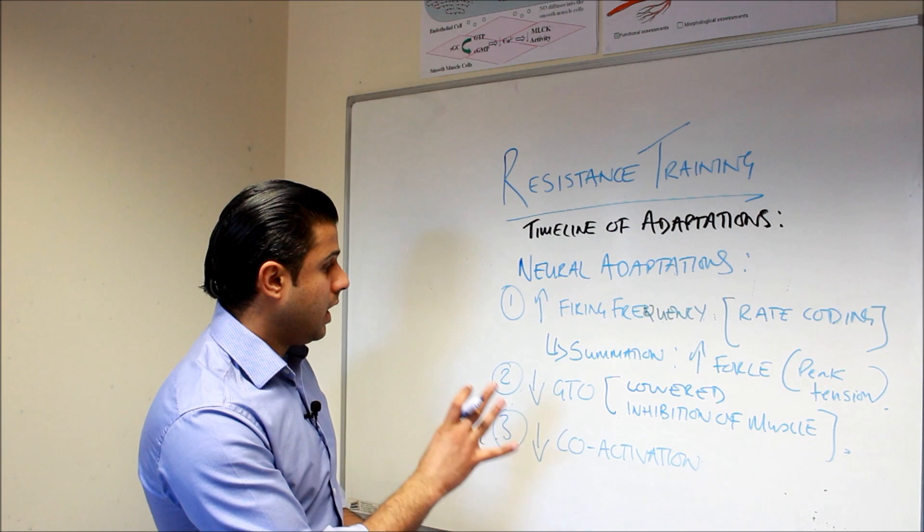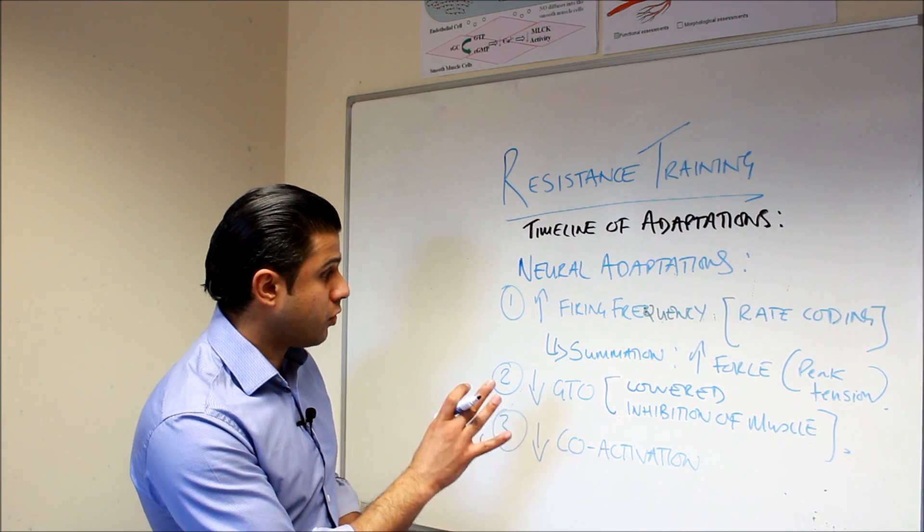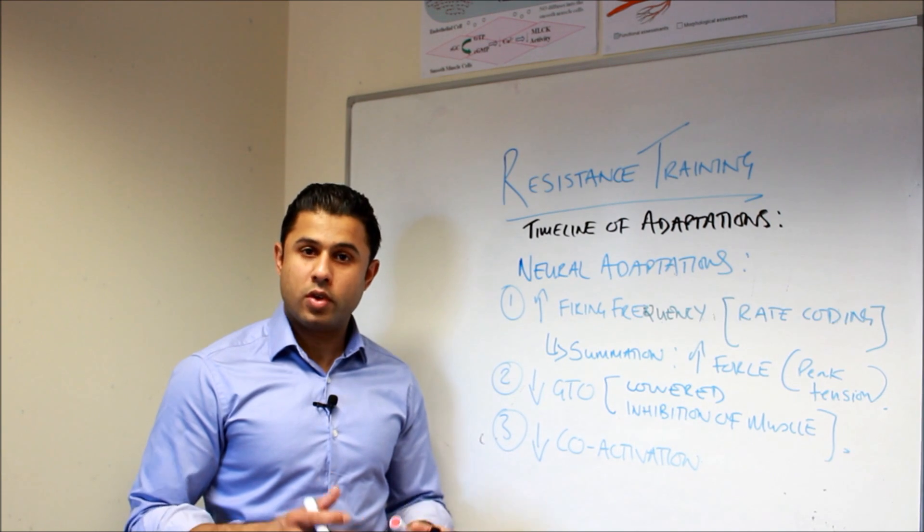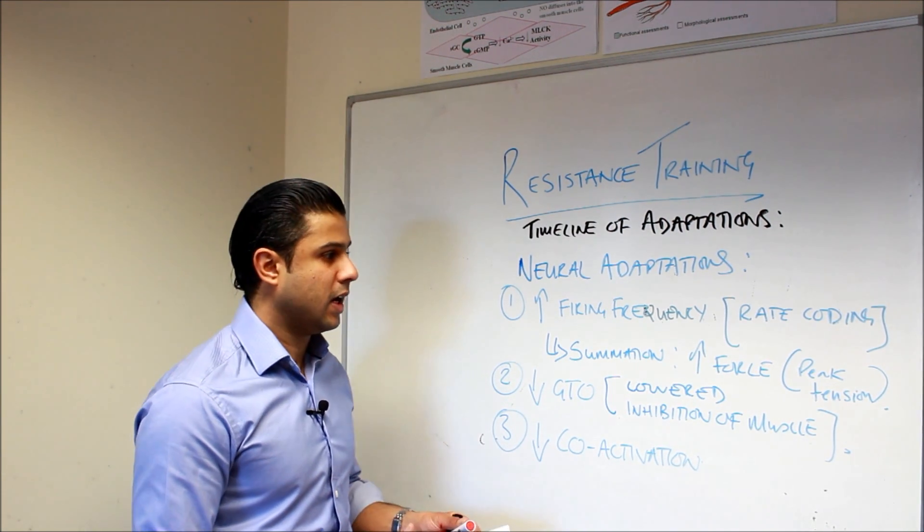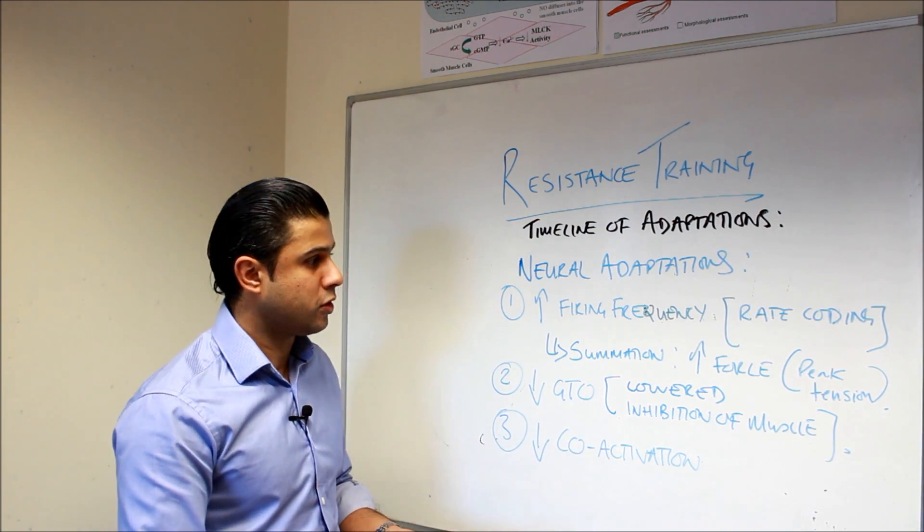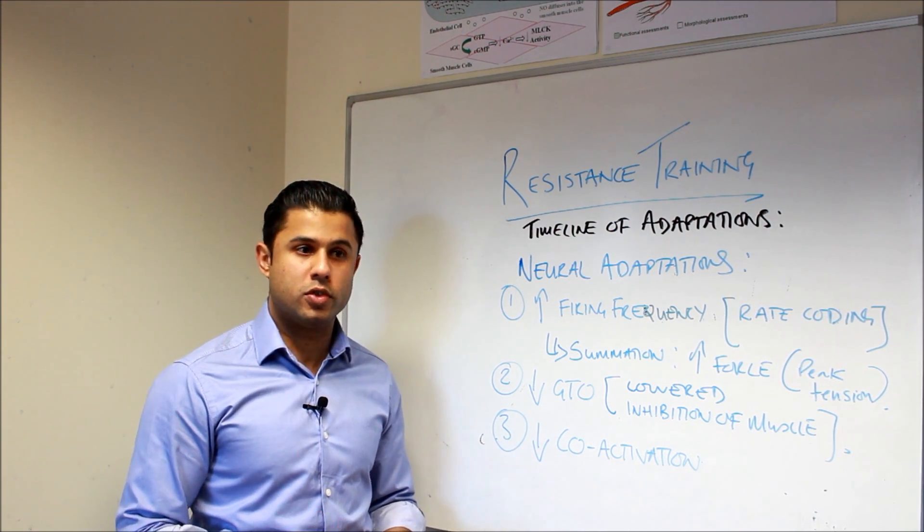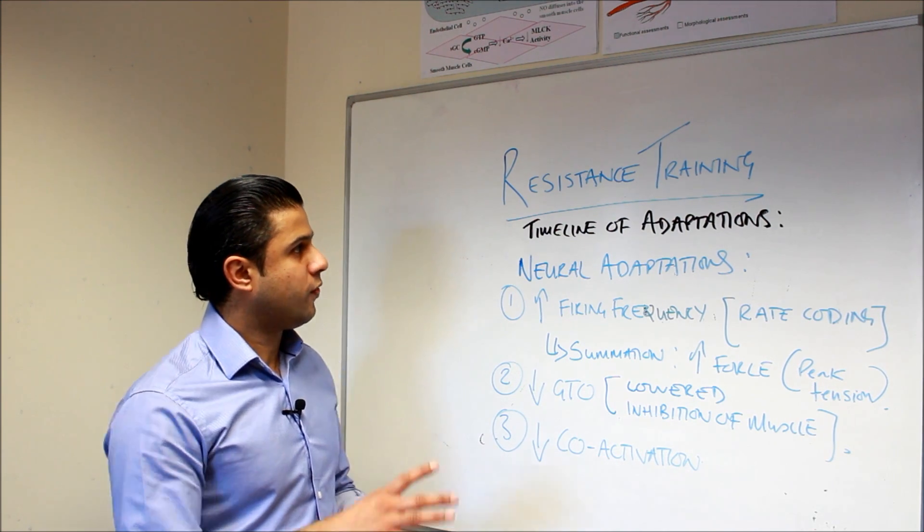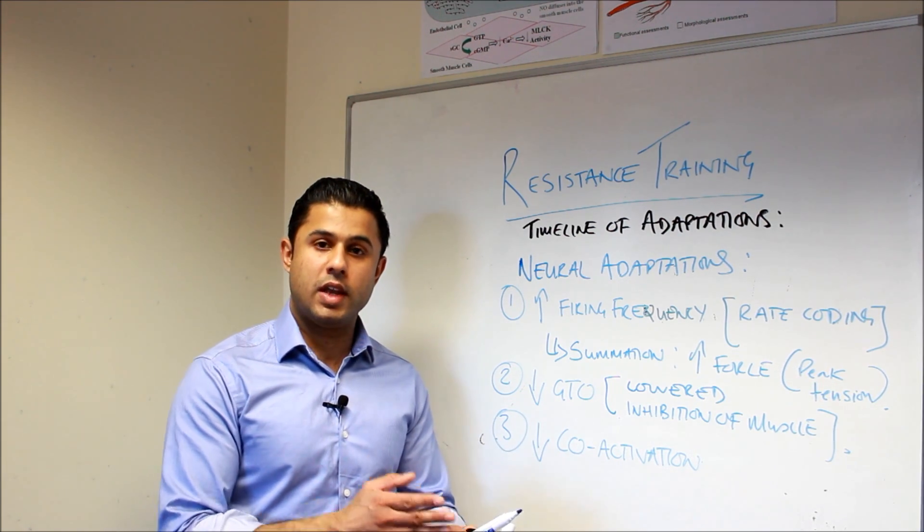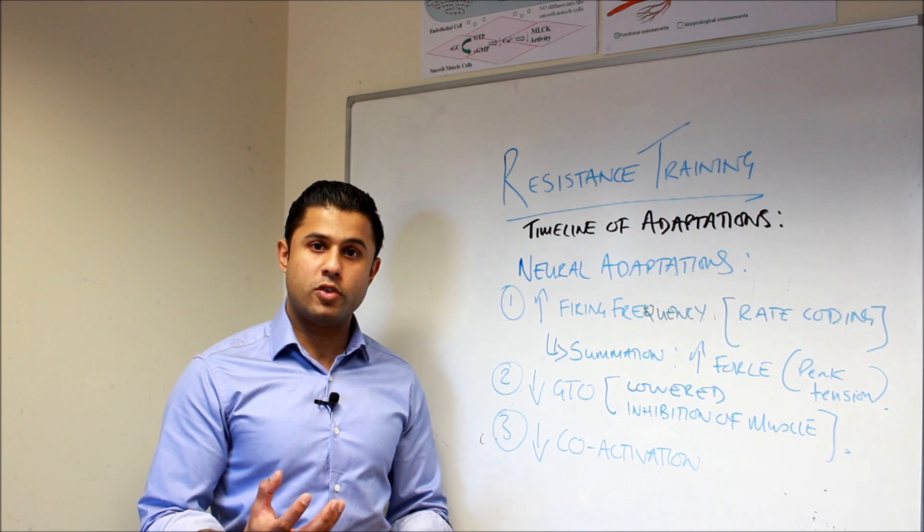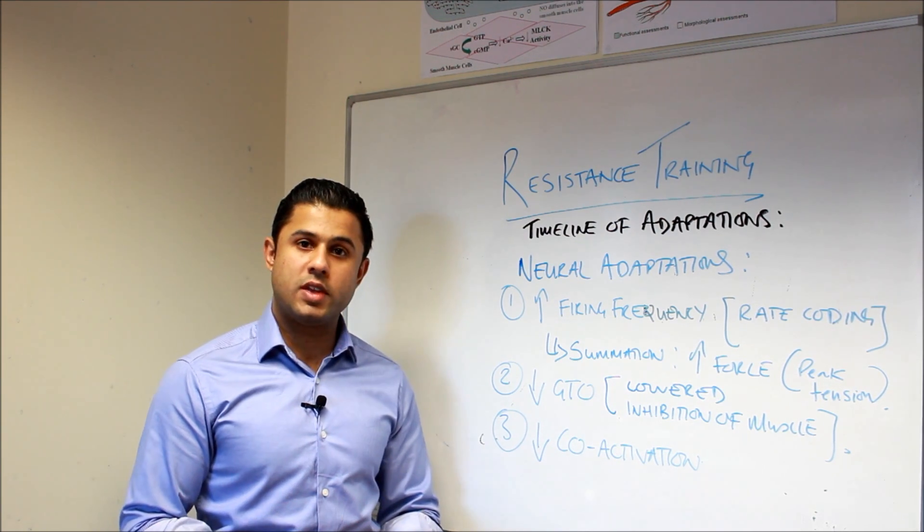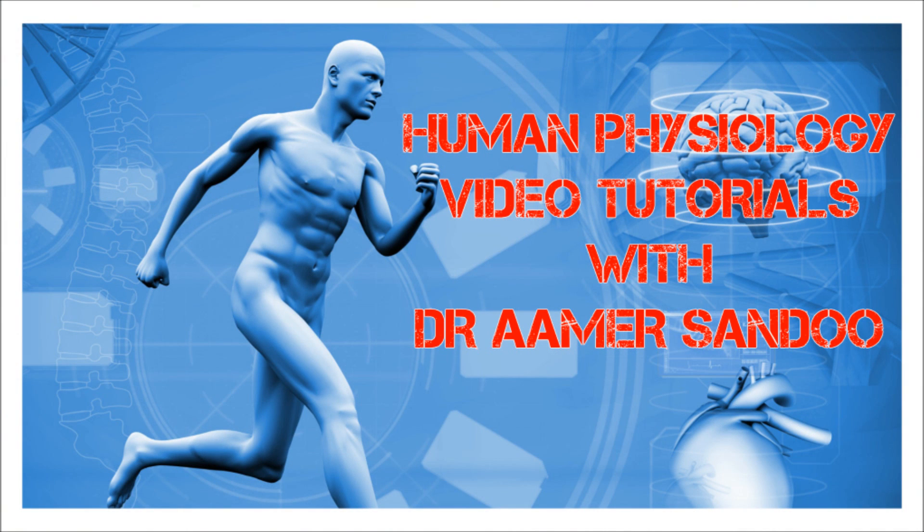So these are some of the main adaptations that we would actually have from the neural adaptations that we'd have from doing resistance training. And they are all occurring in the first six to eight weeks. All of them are extremely important in terms of ensuring that we have that greater neuromuscular control of the muscle. And then obviously, as the training progresses, we'll be moving on to hypertrophy, which contributes mainly to the changes that are occurring. So hopefully you've got some appreciation there of the early stages of resistance training adaptations that occur in a novice person. And in subsequent videos, we will talk about the mechanisms of muscle hypertrophy. So the biology of what's actually happening in the muscle. So please do stay tuned for those. And I hope to see you again soon. Thank you.